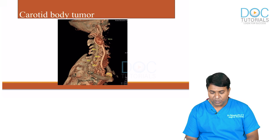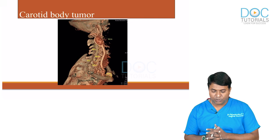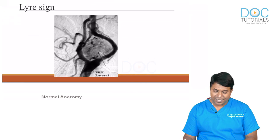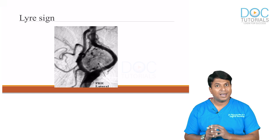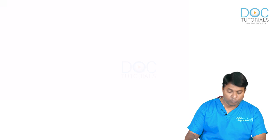This is the image of a carotid body tumor on an MR reconstructive angiogram. You can see the lyre sign — splaying of the common carotid arteries — which is the classical finding. That concludes the discussion on carotid body tumor.